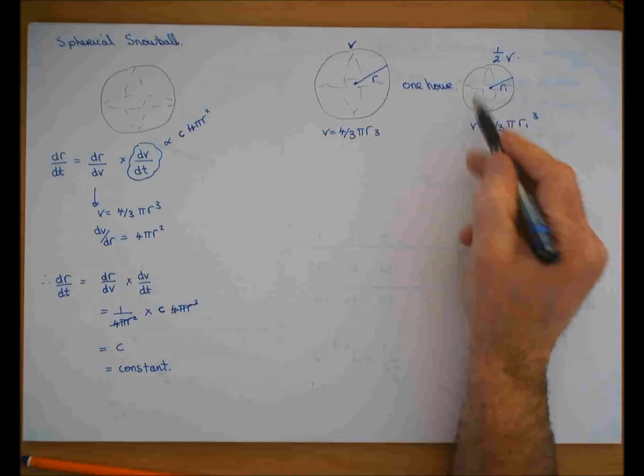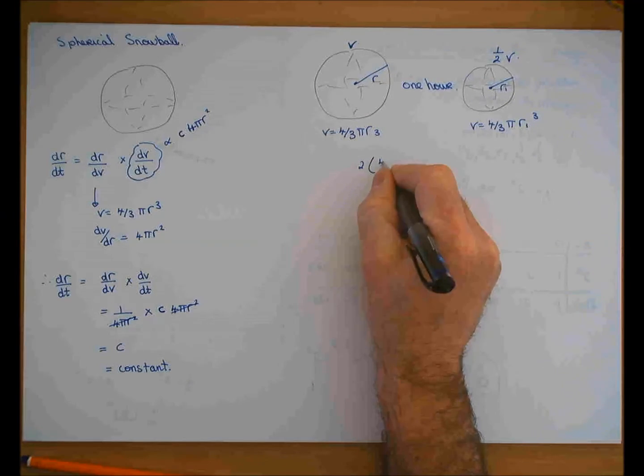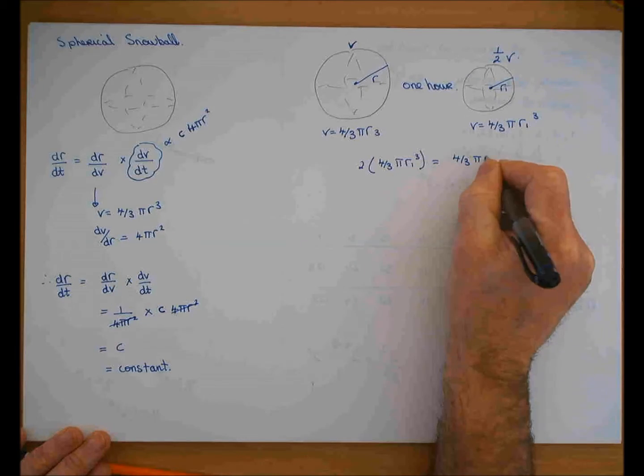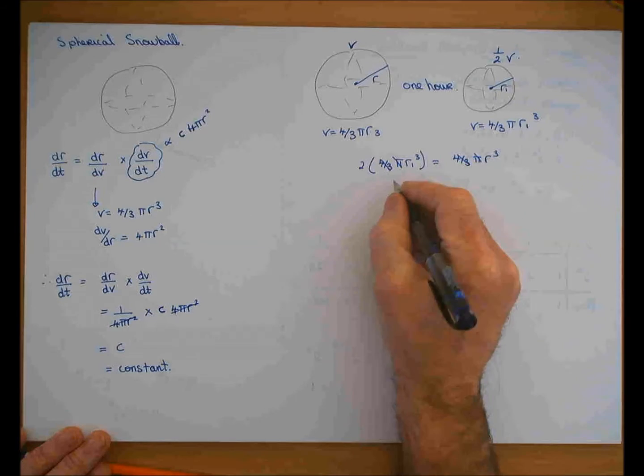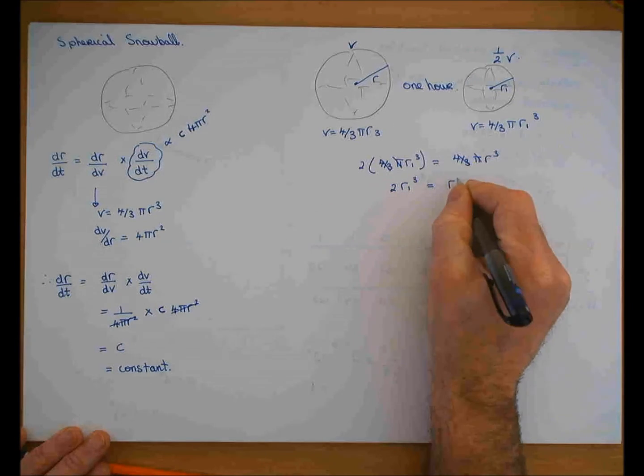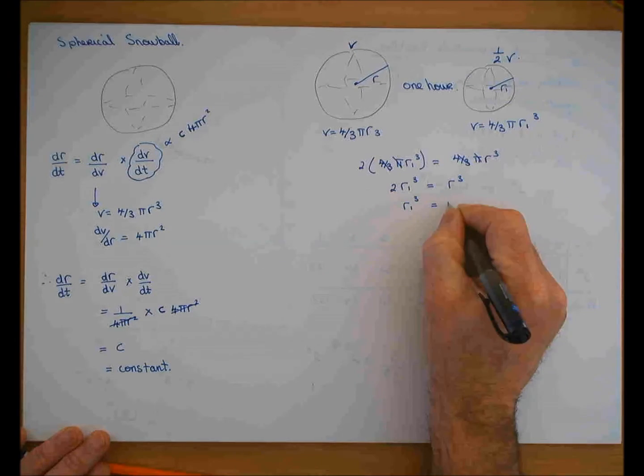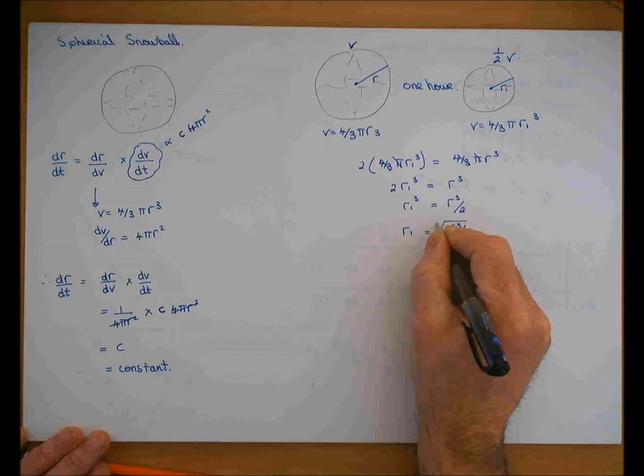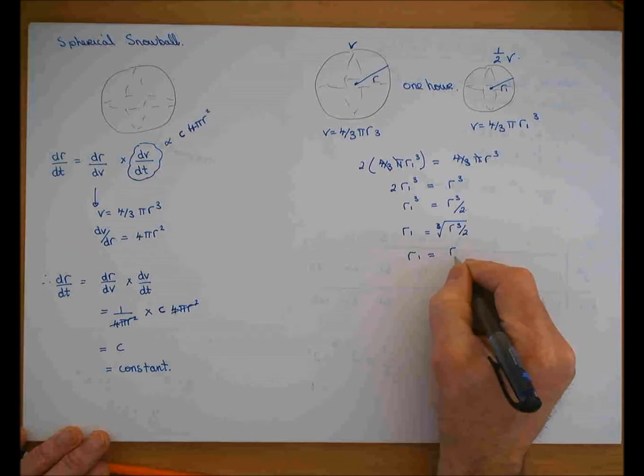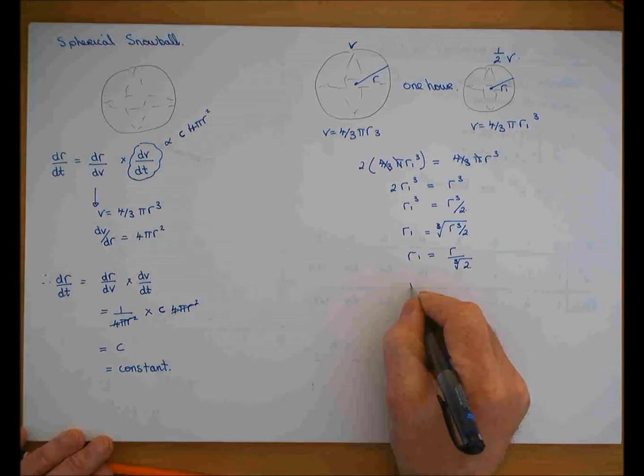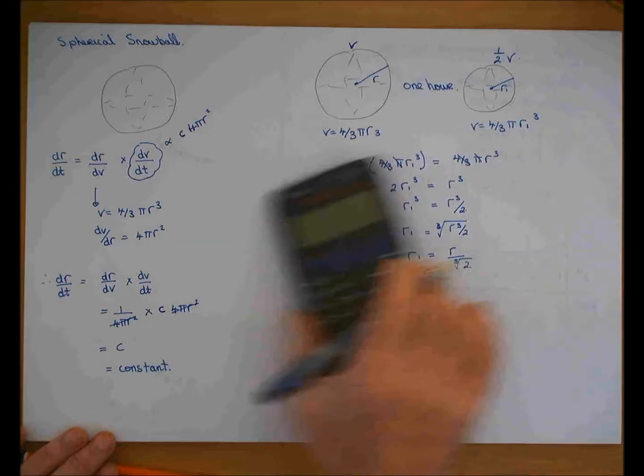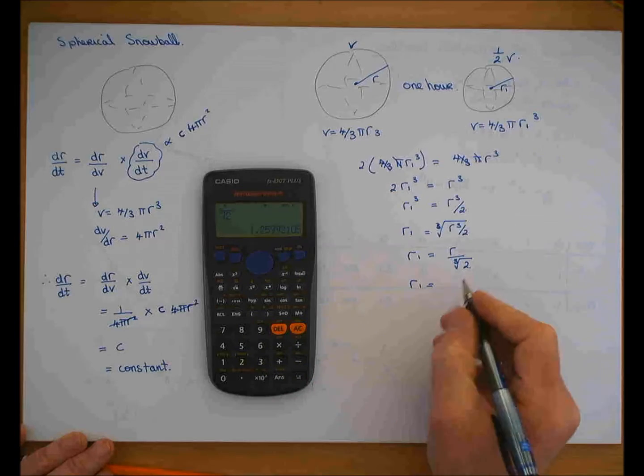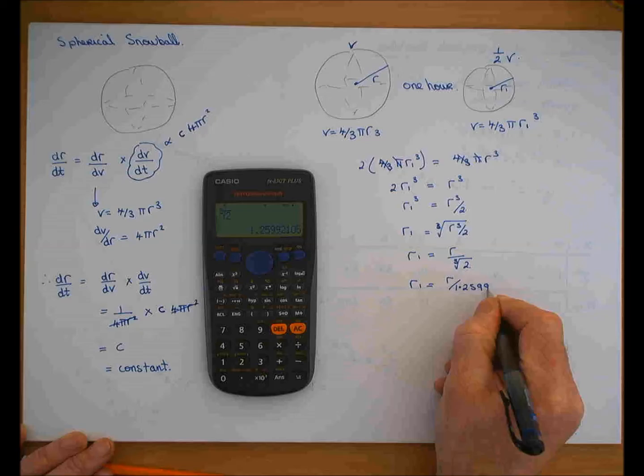Now, that volume, so double this volume is the same as that. So twice 4/3πr₁³ is equal to 4/3πr³. Cancel the 4/3's, cancel the π's. Twice r₁³ is equal to r³. So r₁³ is r³ over 2. So r₁ is equal to the cube root of r³ over 2. r₁ is equal to r over the cube root of 2.